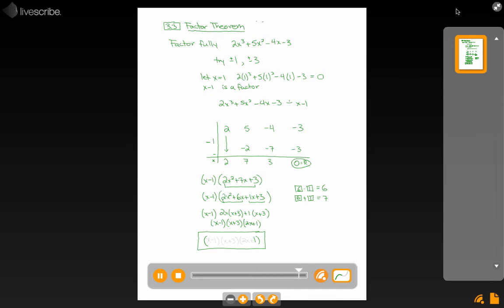So fully factored, this expression x minus 1 times x plus 3 times 2x plus 1 is what we're looking for. And it's exactly equal to the polynomial that we started off with.